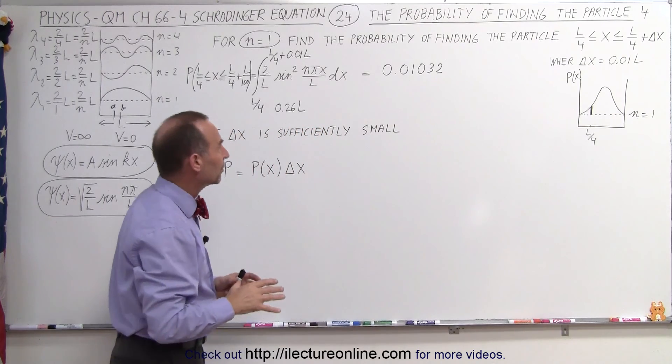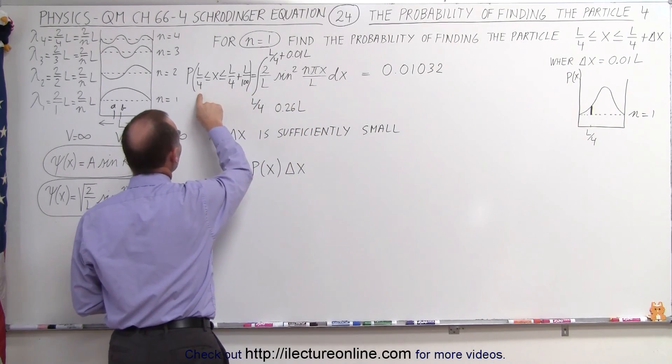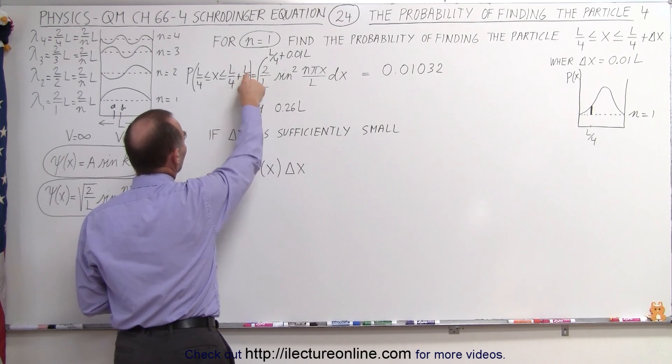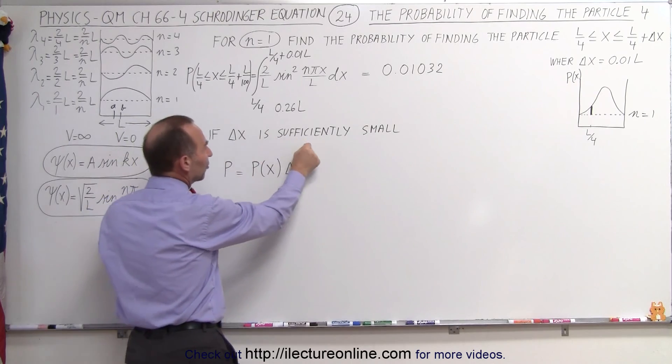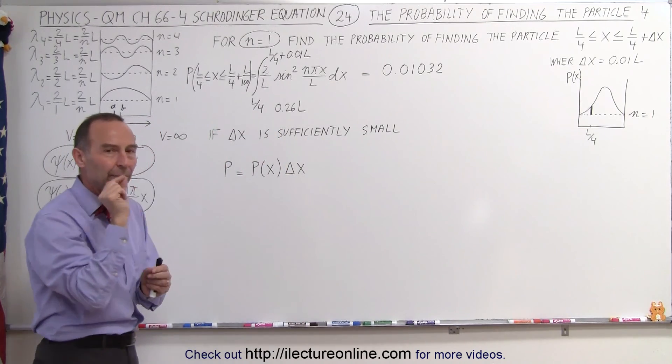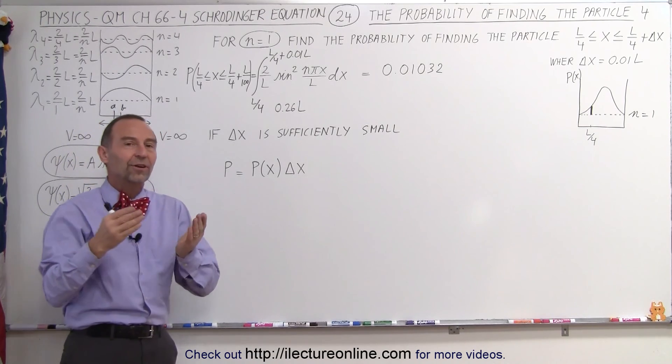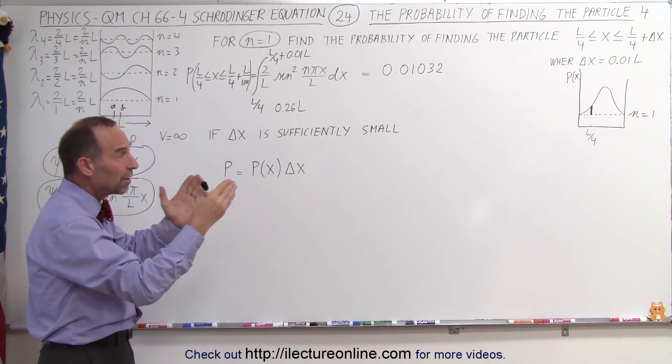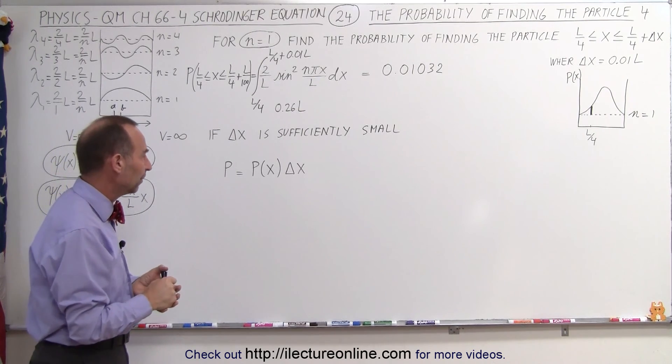What we're going to do here is instead of taking the integral and evaluating it between L over 4 and L over 4 plus L over 100, we're going to now say that if delta x is sufficiently small, there's another way of finding the probability of finding a particle at a particular location. Now of course, we're using this for a very simplistic example, a one-dimensional well, but you'll see in the future that this can be used for more complex models as well.